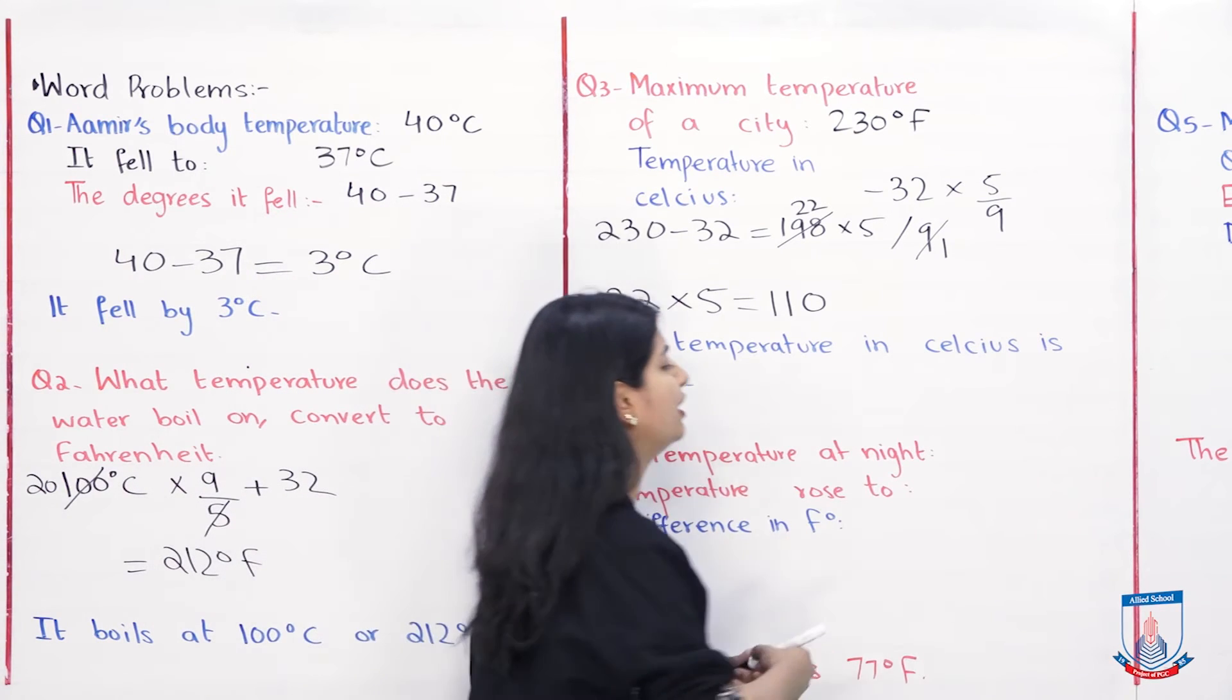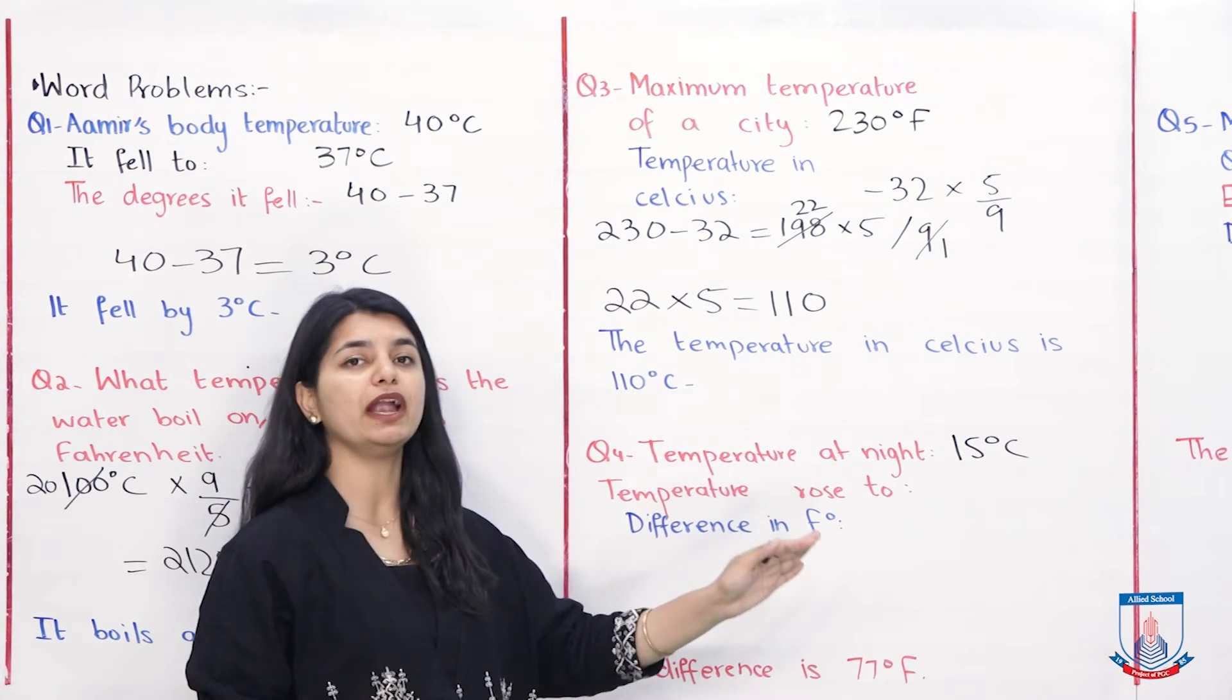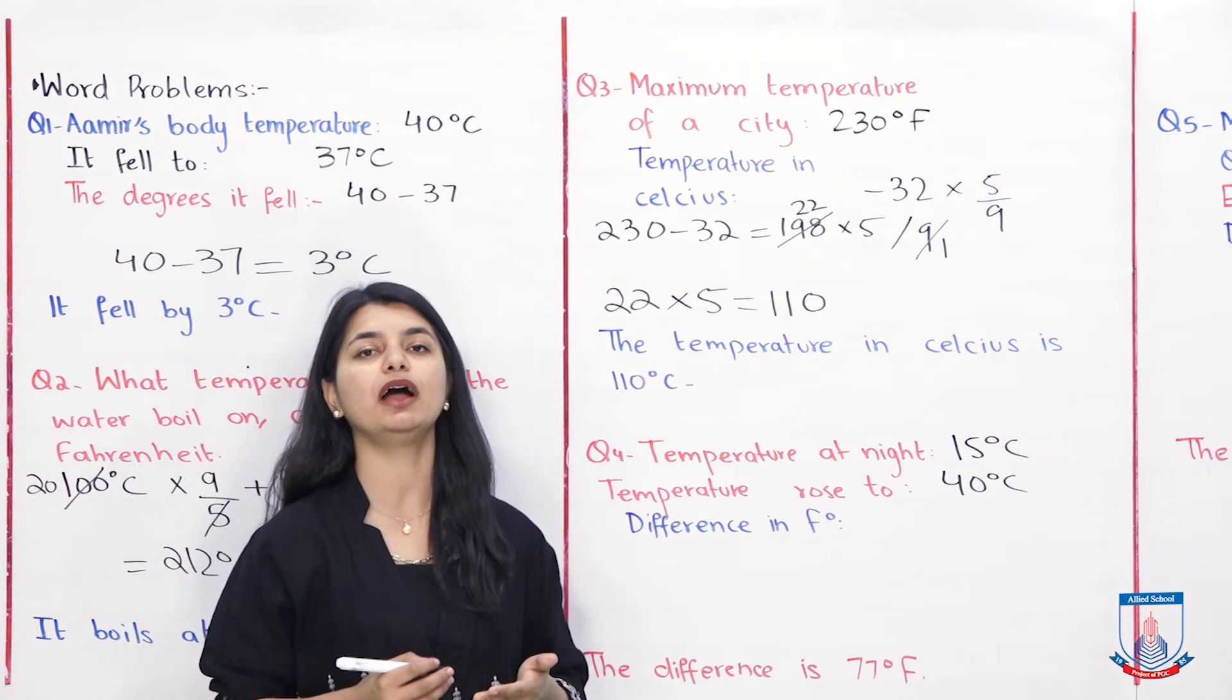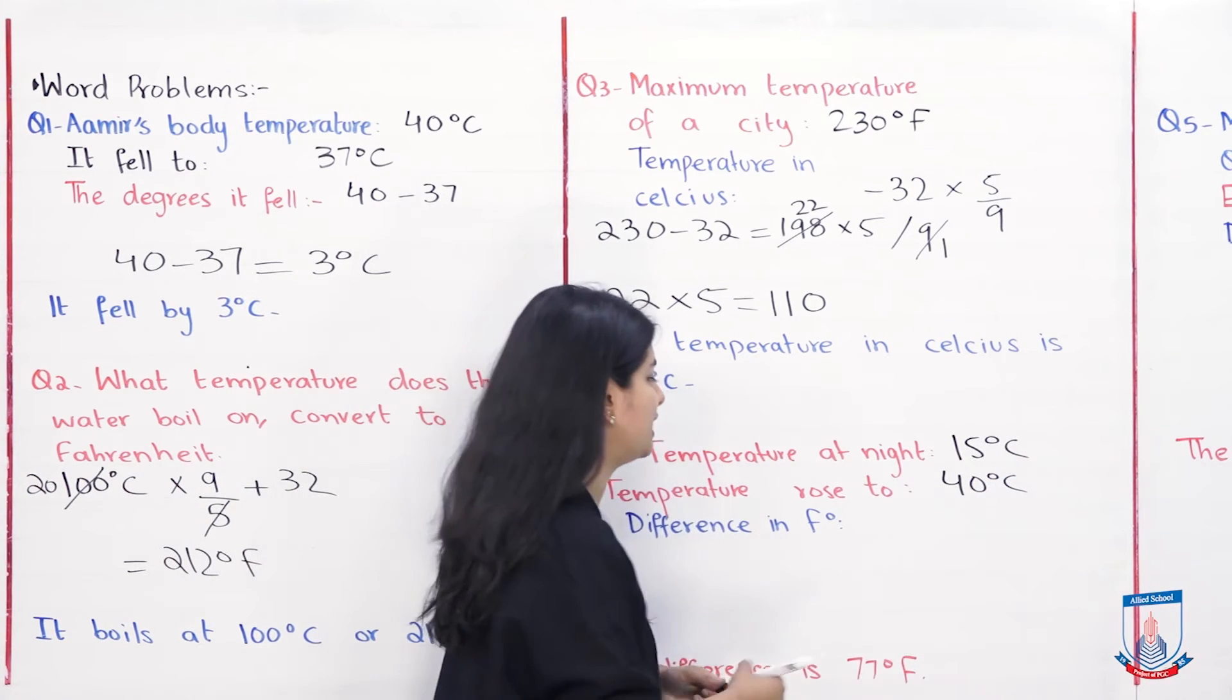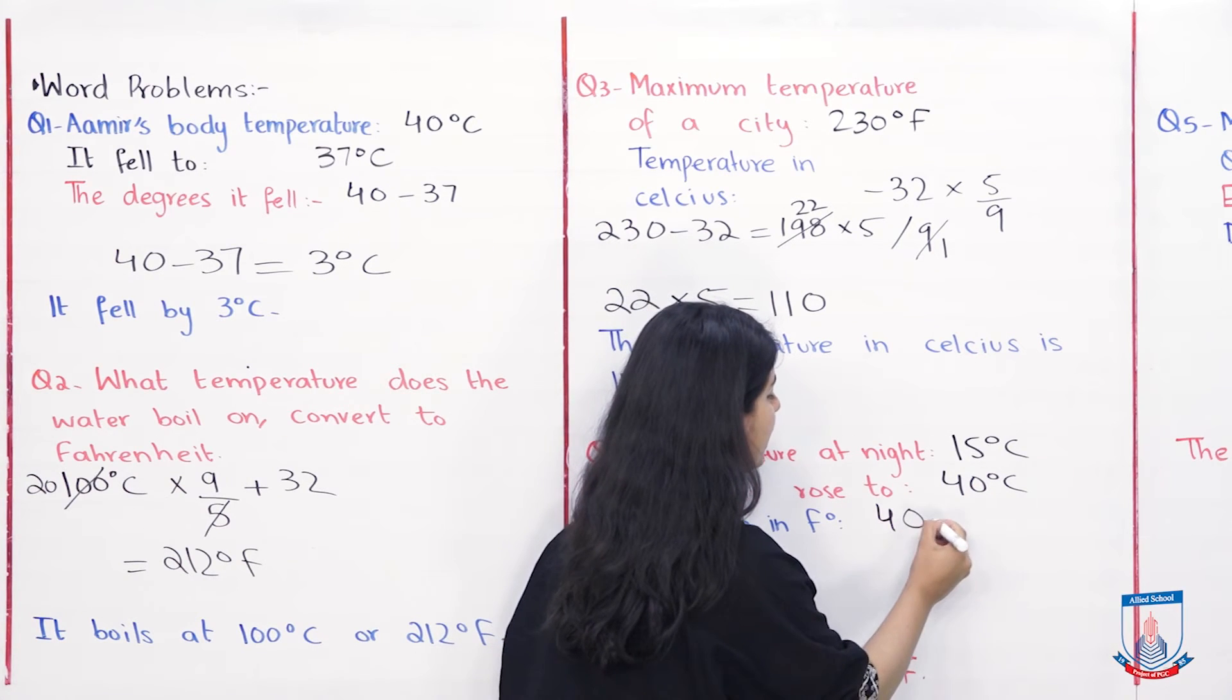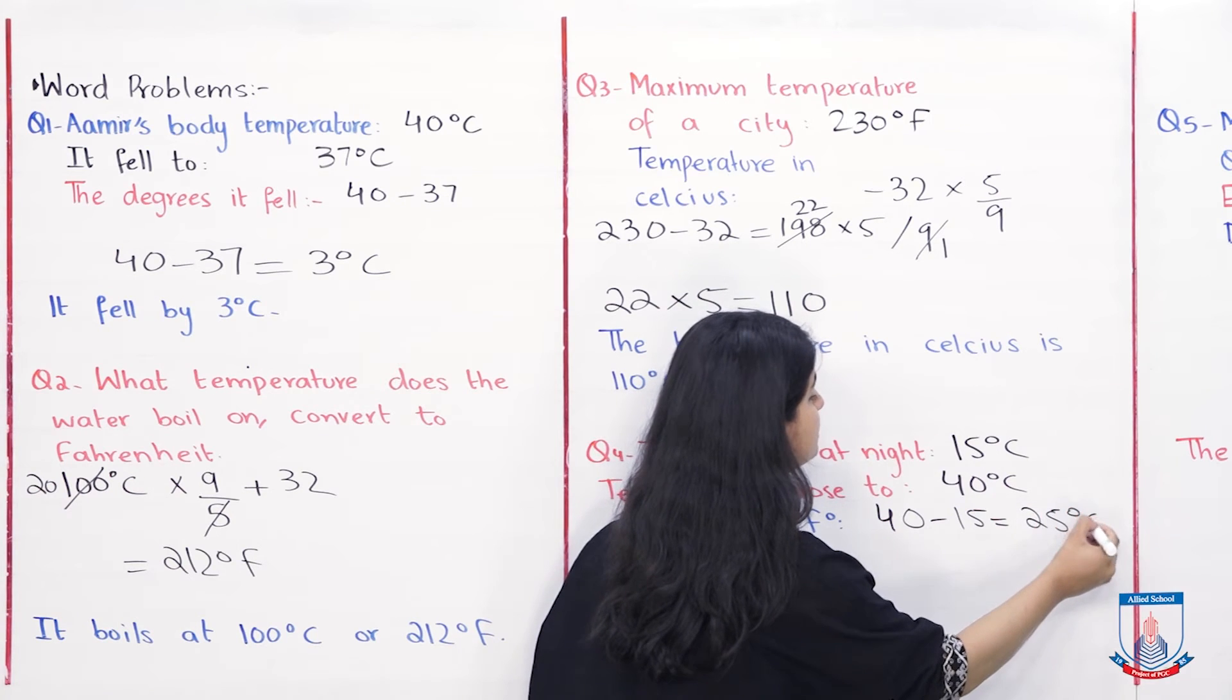Temperature at night was 15 degree centigrade and the next day it rose to 40 degree centigrade. You have to tell us how much difference will happen in Fahrenheit. So before you minus 15 from 40, 40 minus 15 equals 25 degree Celsius.